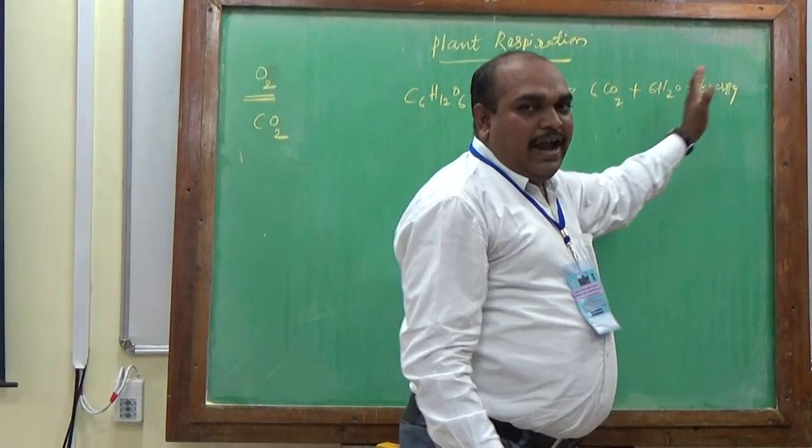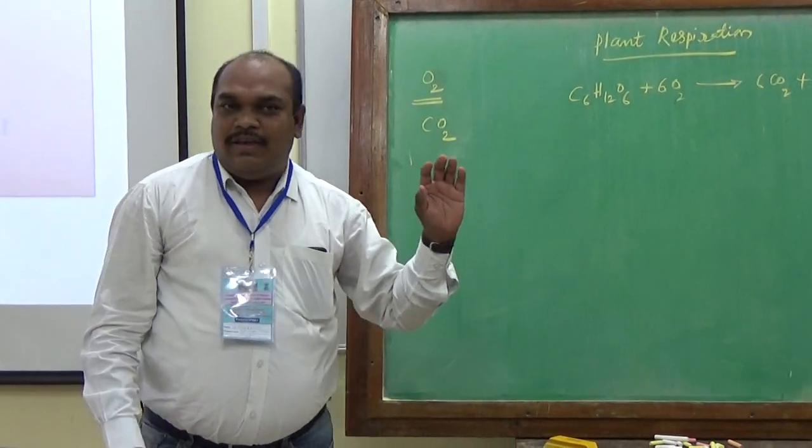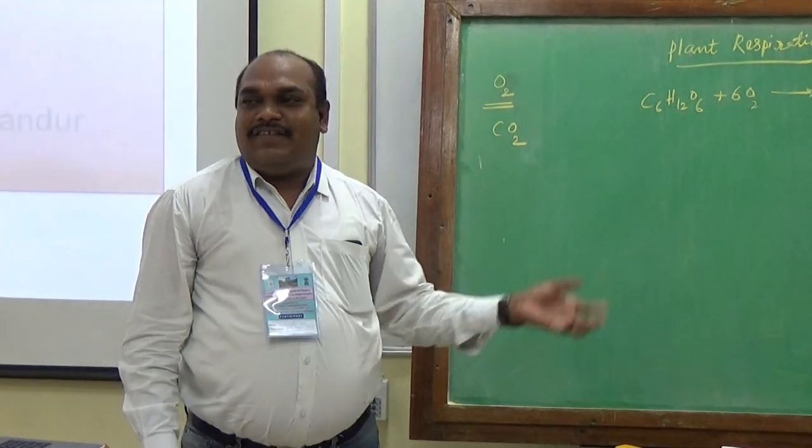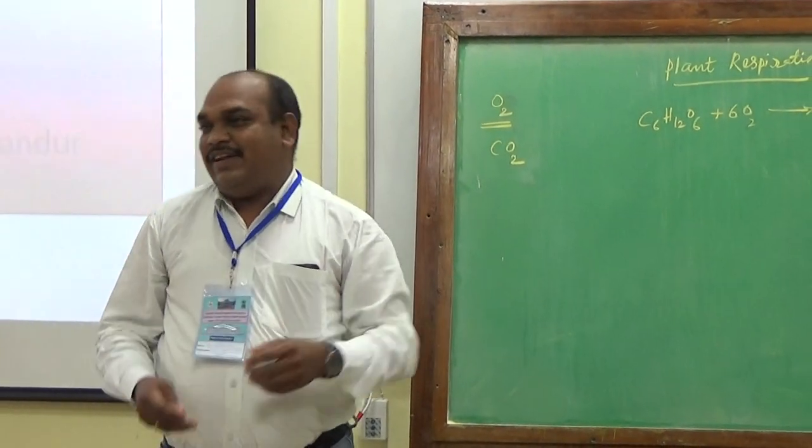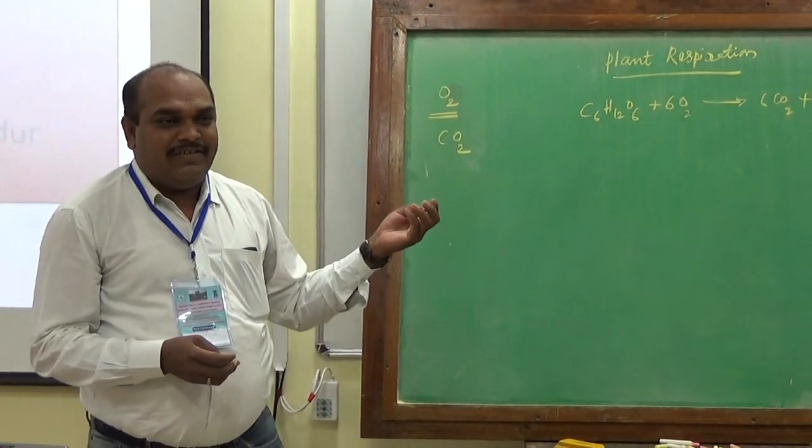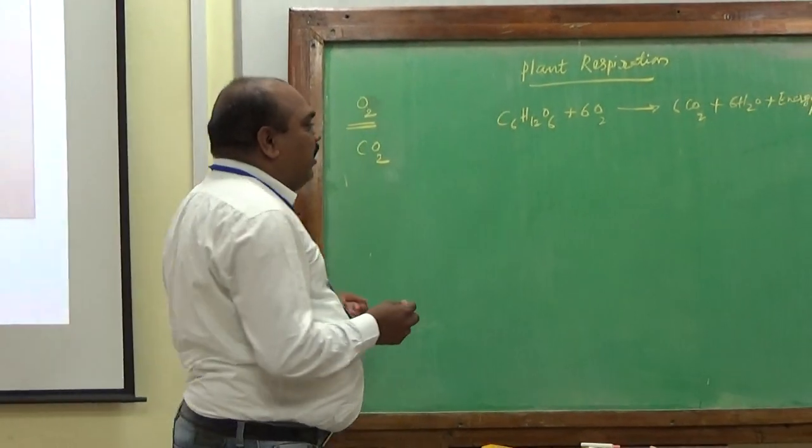One is carbon dioxide, water, and energy. How much energy? Depends on plant size and everything. 686 kilocalories, that is the complete process. After ending of the aerobic respiration, the results come out. It is the initial stage, introduction stage. So later the concepts also come.